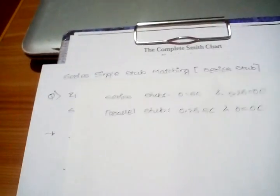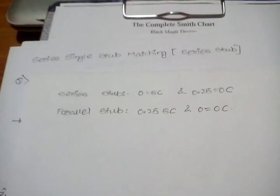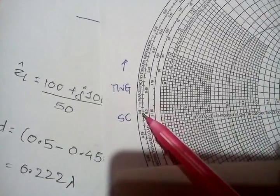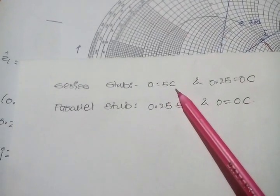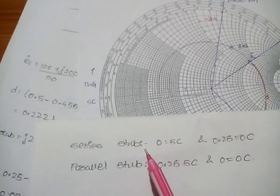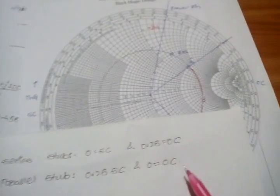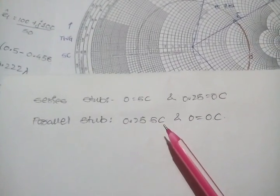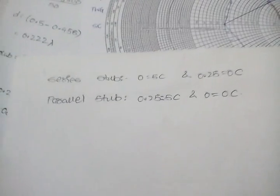Always remember this fundamental rule: when it's a series stub, on the Smith chart 0 is the short circuit case and 0.25 is the open circuit. For a parallel stub it is vice versa — 0.25 will be short circuit and 0 will be the open circuit.